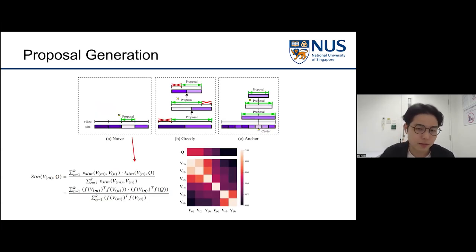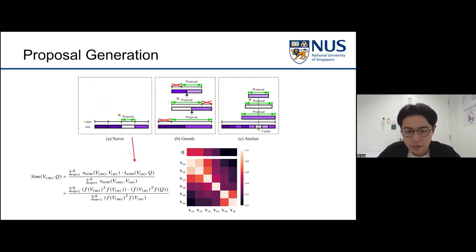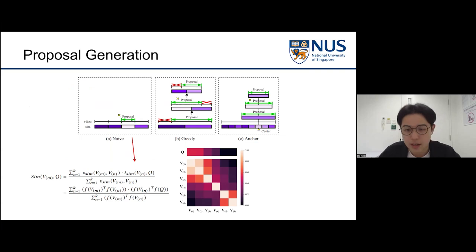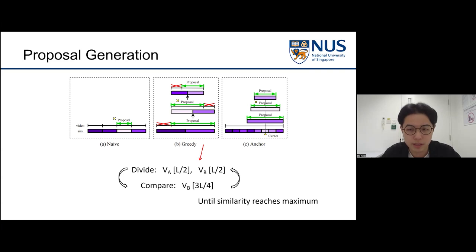The problem falls into a proper proposal generation method. The most intuitive idea is the naive method: select the most relevant clip as a pseudo label, where similarity is determined relative to all other clips, and high-similarity blocks in the similarity matrix indicate potential video moments. There is also the greedy method, which repeatedly eliminates the unlikely portion until similarity reaches maximum — for each round we compare each half of the video and erase a quarter of the side with lower similarity, repeating until the score no longer increases.